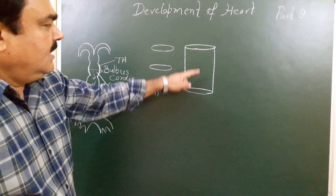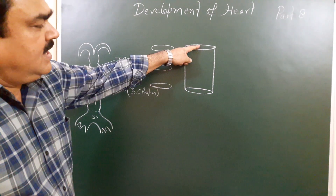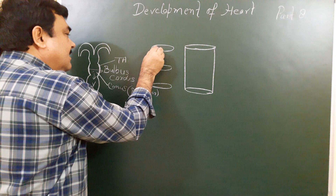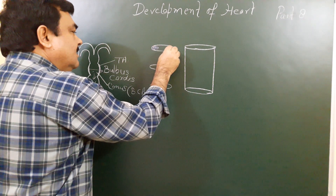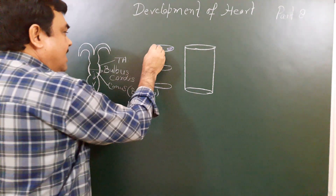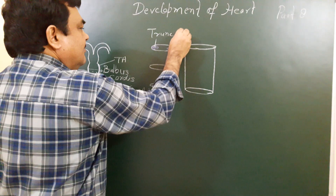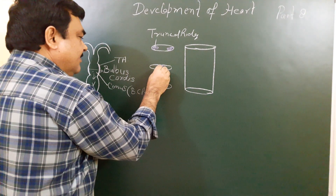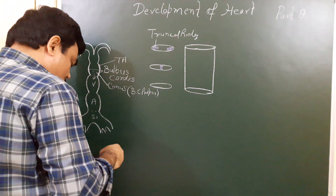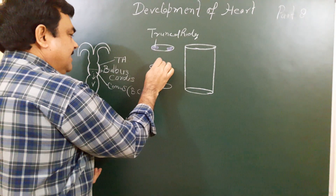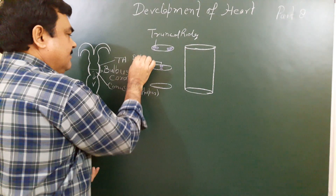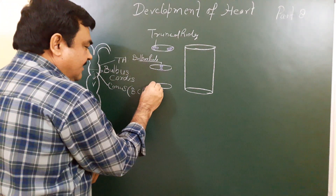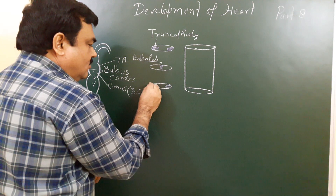In this diagram we look at three levels: upper, middle, and lower end. In the upper part, two truncal ridges arise on both sides. In the middle part, two bulbar ridges are present, and here in the lower part, again two bulbar ridges are present.